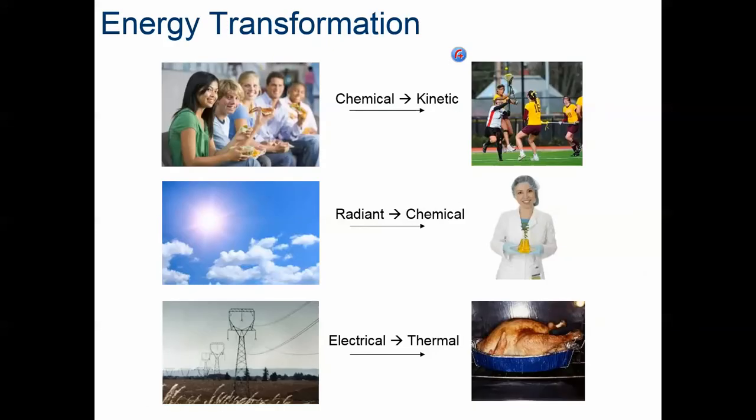Oftentimes, energy is transforming between forms. As an example, chemical to kinetic, such as when we eat our food, then we play a game. Radiant from the sun into chemical energy, such as when we have natural gas, coal, and oil. Obviously, those take multiple millions of years to do, but that's okay. And electrical and thermal energy. These are all just basic examples. There's quite a few more examples.